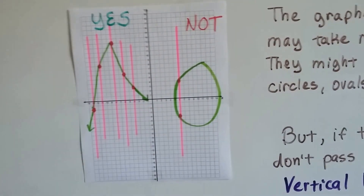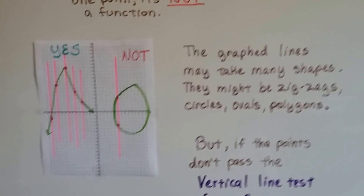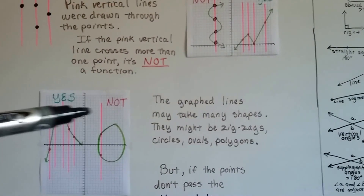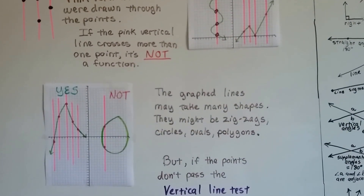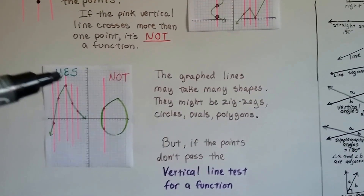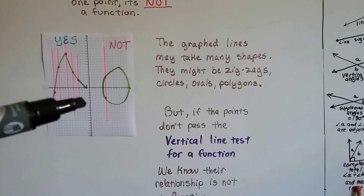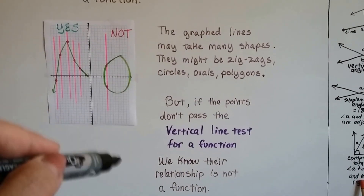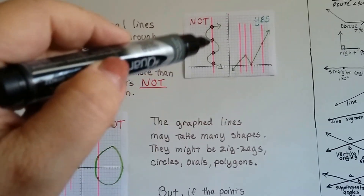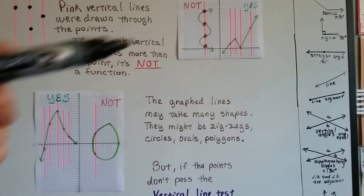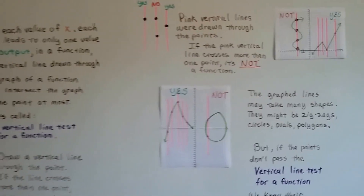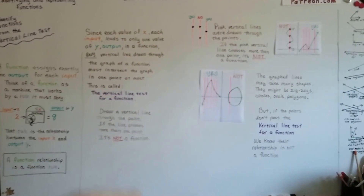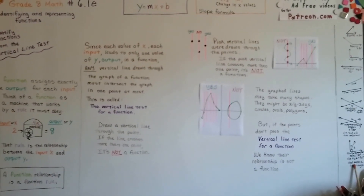The graphed lines may take many shapes — they might be zigzags, circles, ovals, or polygons. We're going to draw figures on coordinate planes in the future. So we do the vertical line test, and if the points don't pass the vertical line test, we know the relationship is not a function. The vertical line test sounds harder than it really is — just draw a straight vertical line, and if you cross a point more than once, it's not a function.